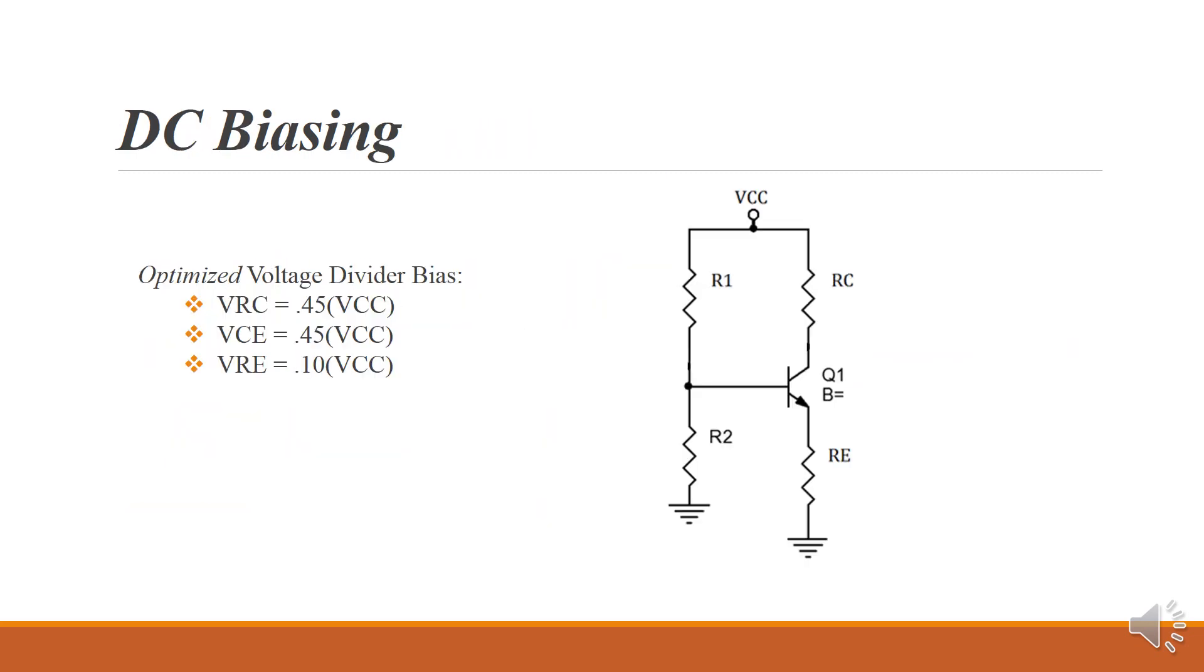Here's the standard format for a voltage divider bias transistor circuit. We've got R1, R2, RC, the transistor, and RE, with the base of the transistor connected between R1 and R2.